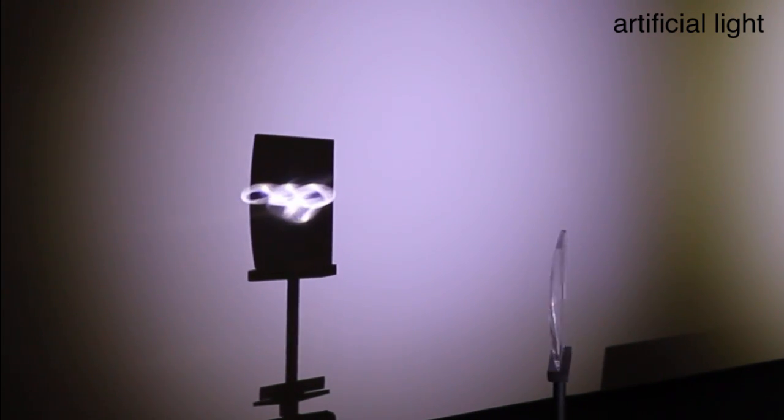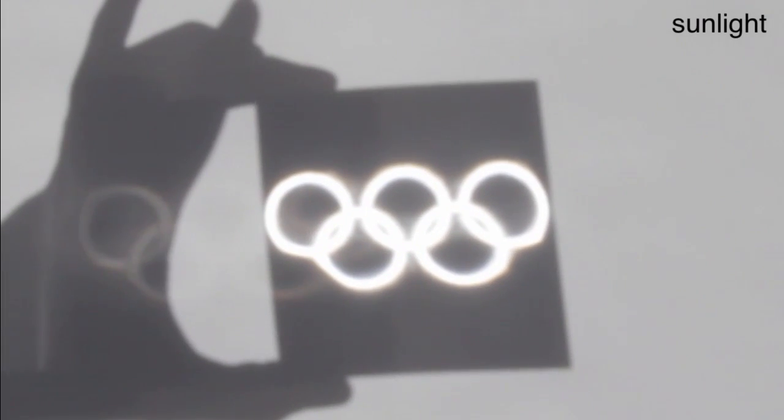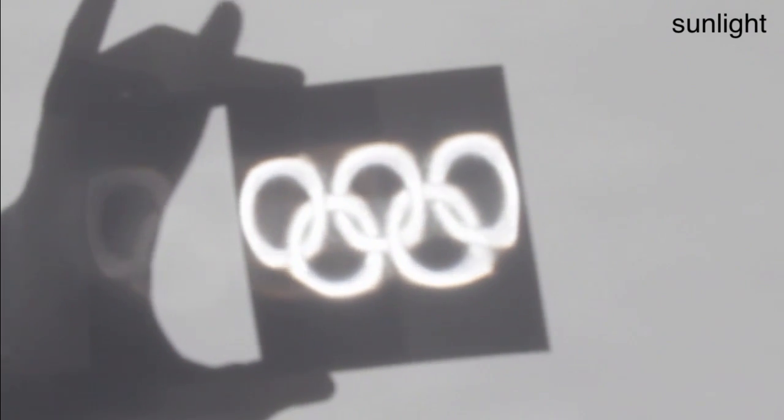This is a piece that forms the Olympic rings. The piece is 10 centimeters squared and has a focal plane 30 centimeters away. The piece works very well in sunlight as well as artificial light.